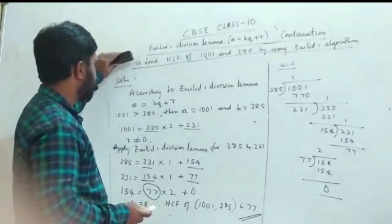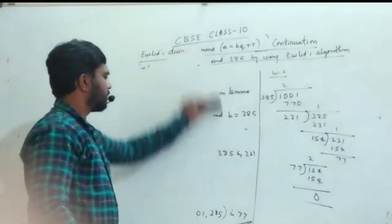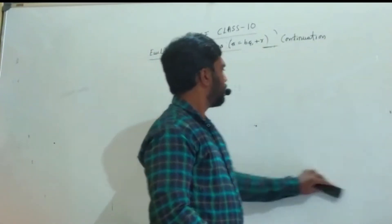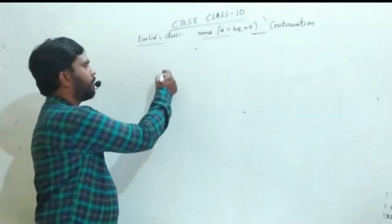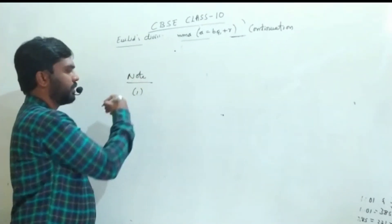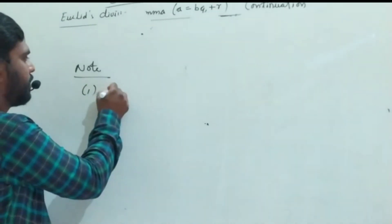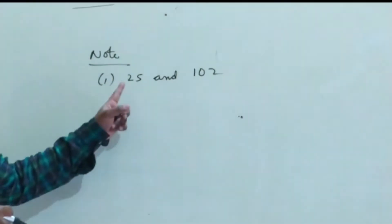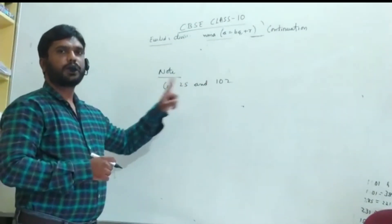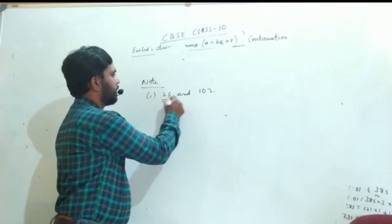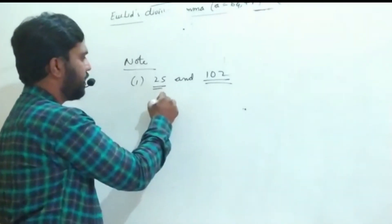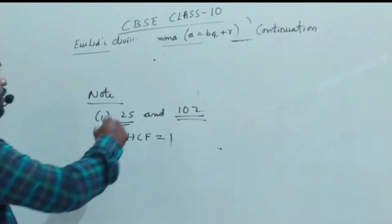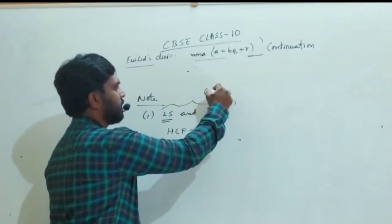Some things you need to note. First note: if you have two numbers — for example, 25 and 102 — you may find their HCF is 1. Leaving 1, there is no other common factor. So these two numbers are called co-primes.